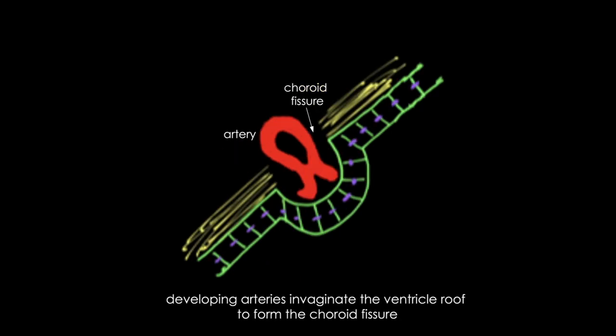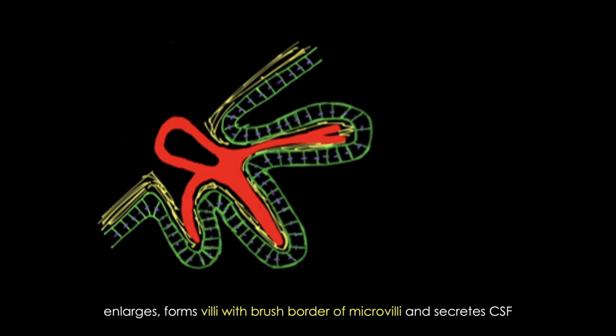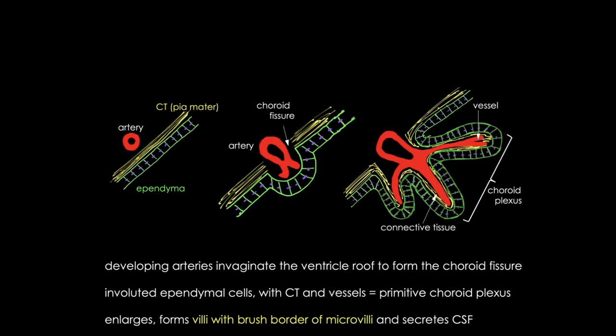Next, the developing vessels begin to invaginate into the ventricle roof, and they kind of push the tissue into forming finger-like folds or villi. The choroid plexus folds into many villi around each capillary, creating frond-like processes that project into the ventricles. Now, these villi, just as in the small intestine, along with the brush border of microvilli, greatly increase the surface area of the choroid plexus. And this tissue can produce up to 500 milliliters of CSF per day in the adult human brain, which is darn remarkable. And this next image simply shows the process all put together.